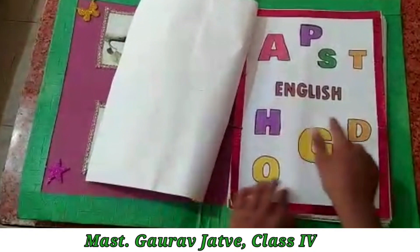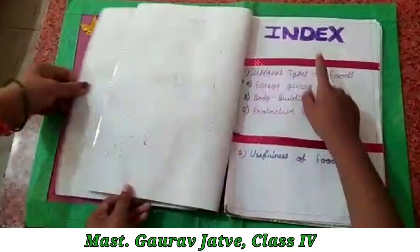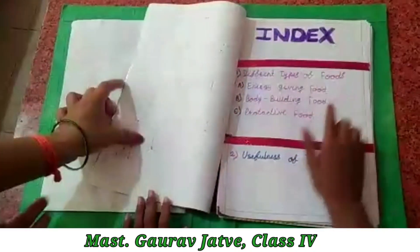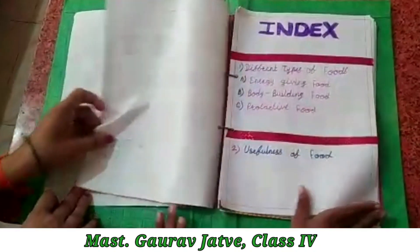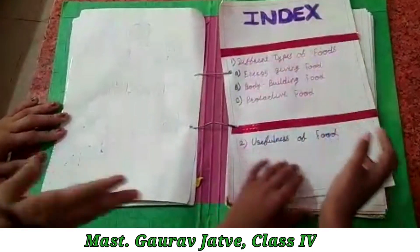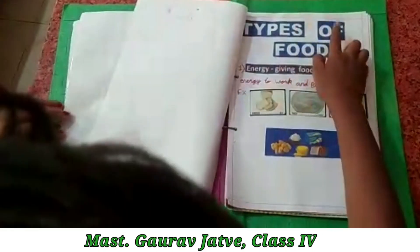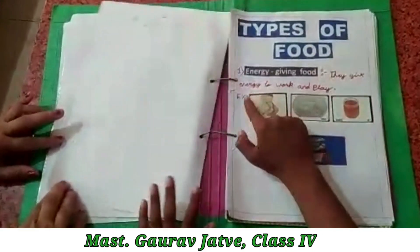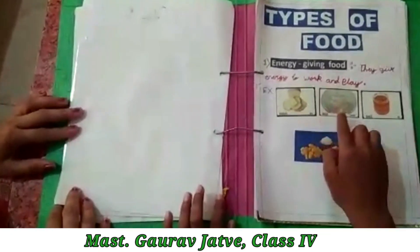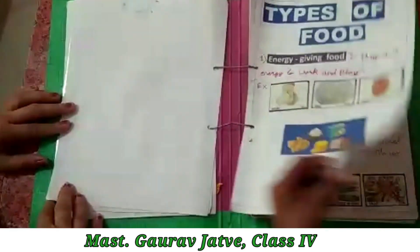This is my English project. Index: different types of food, usefulness of food. Types of food — energy giving food: bread, rice, and ghee.